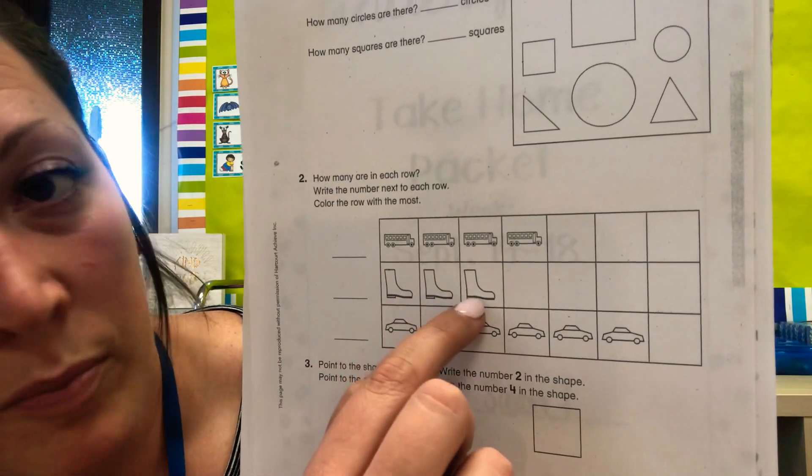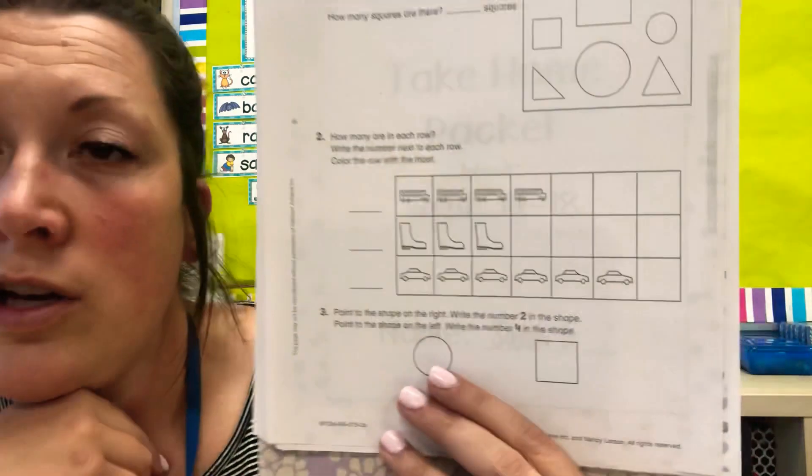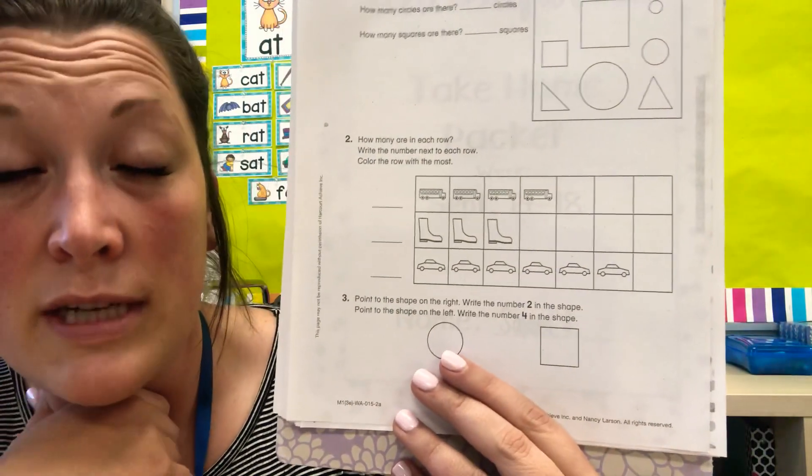How many boots? Write the number here. However many cars? Write the number here. Go ahead and push pause if you need more time.